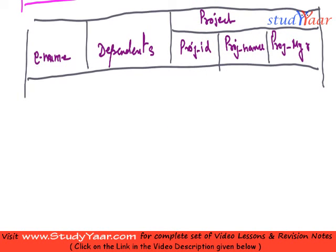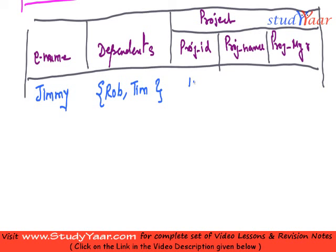So what kind of values would we have in this table? Let's suppose my employee's name is Jimmy. His dependents would be Rob and Tim, and his project is one having ID 126, project name Alfa, and project manager Tim.